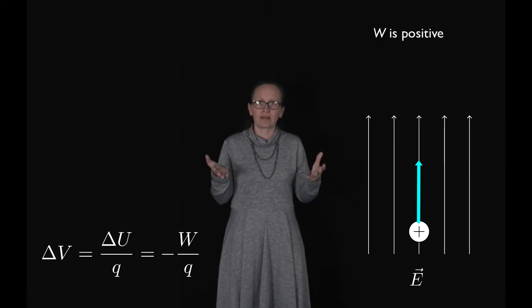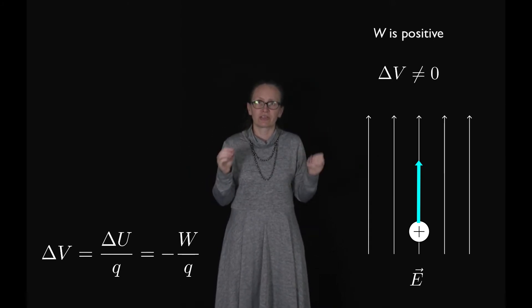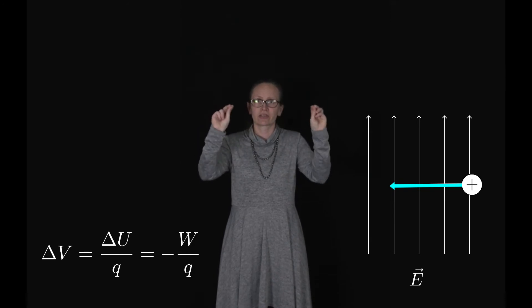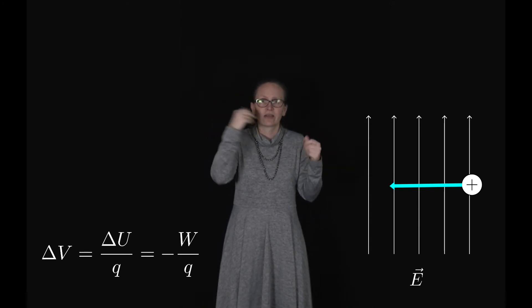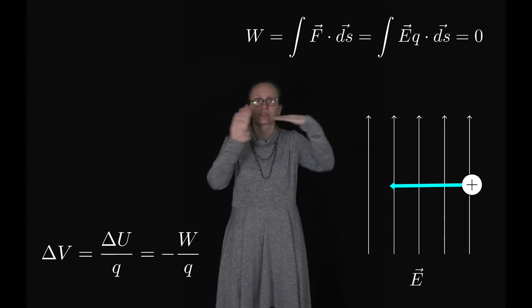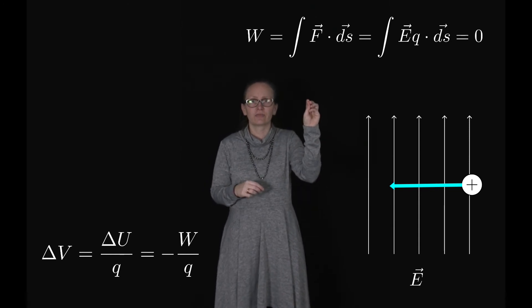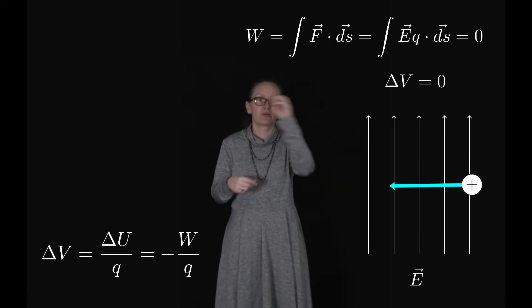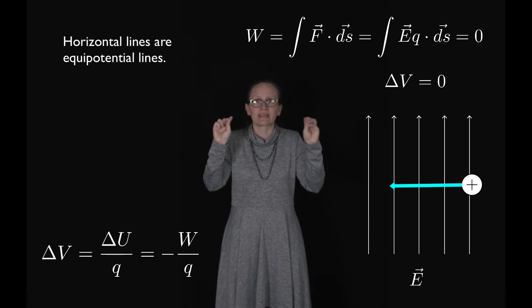If the electrostatic work on the particle is not zero, it tells us that the voltage must be changing — the potential difference is also not zero. Now imagine moving a particle perpendicular to this field, so in a horizontal line. The electrostatic work equals the integral of F·dS = ∫eQ·dS, and because E and the displacement are perpendicular, their dot product is zero. So no electrostatic work is done moving a charged particle horizontally, meaning there is no voltage difference — horizontal lines in this field are equipotential lines, all at the same voltage.